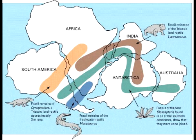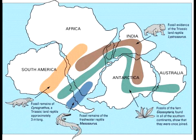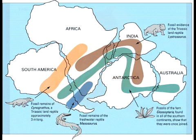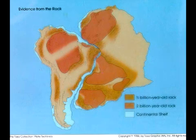Wegener also gave fossil evidence for continental drift. Fossils of the same species were found on completely separate continents, and not only that — they were consistent. For example, fossils from the same time periods are found in the same areas. Third, Wegener's hypothesis explained why rocks and mountains of the exact same type, age, and composition are found in separate parts of the world.